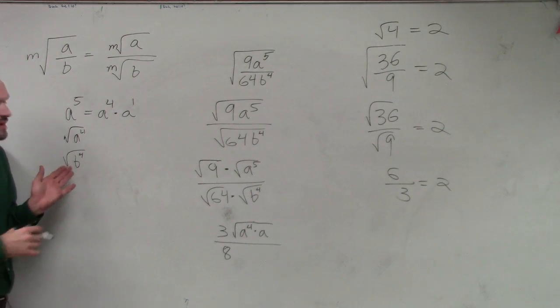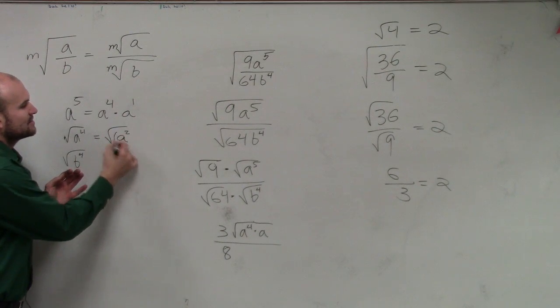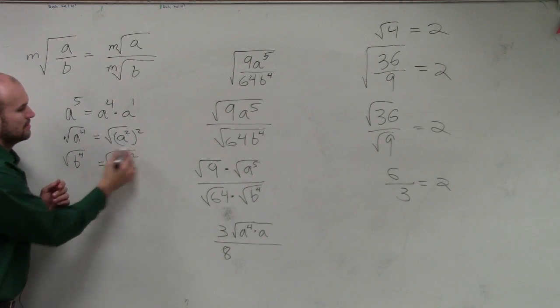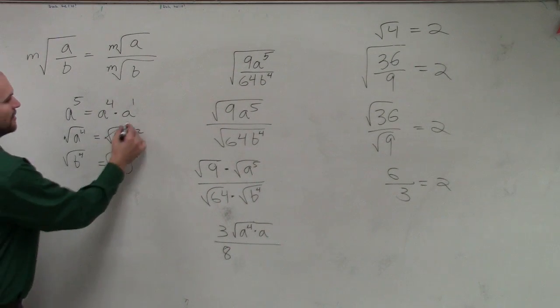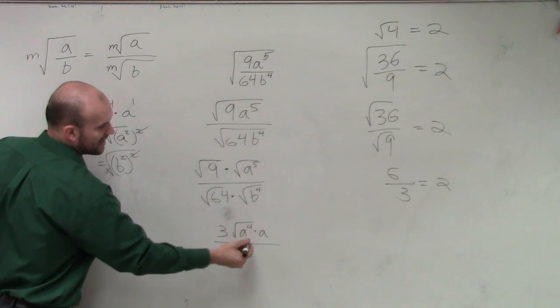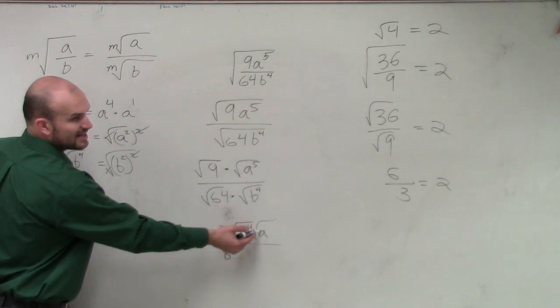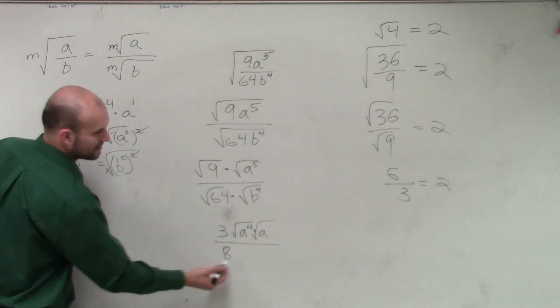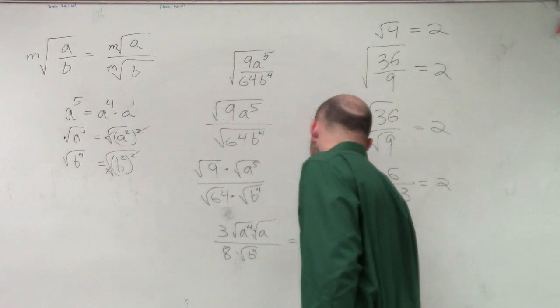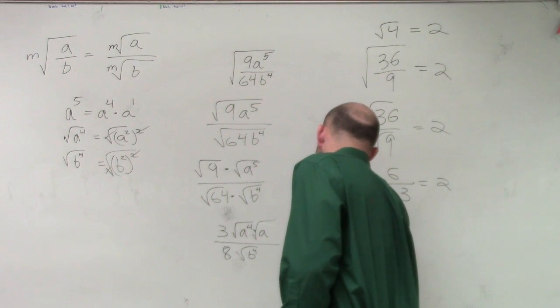When looking at these values, remember, since we're taking the square root, we need to write them as something squared. So we write this as a squared squared, and this equals b squared squared. Therefore, my answer is just b squared. However, if I broke this up into the square root of a to the fourth times the square root of a, you notice you can't simplify the square root of a. So my final answer is going to be 3a squared square root of a divided by 8b squared.